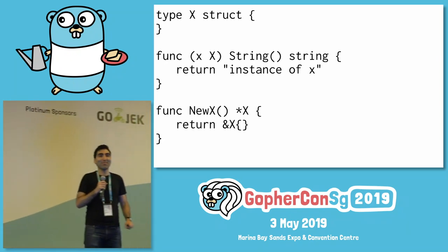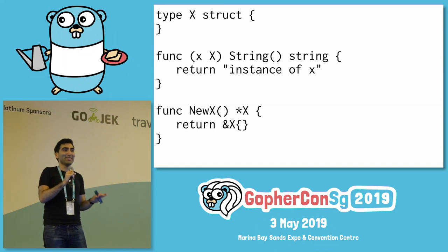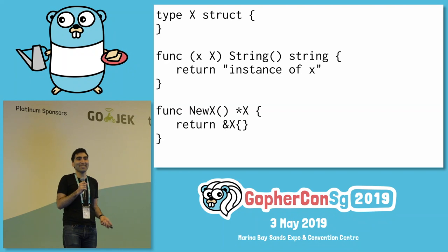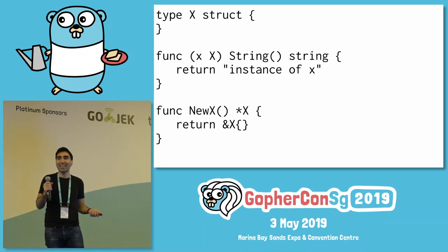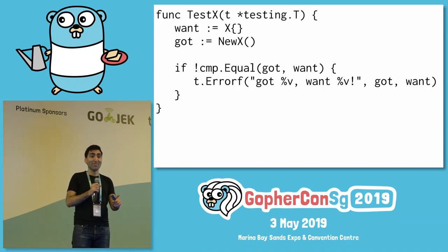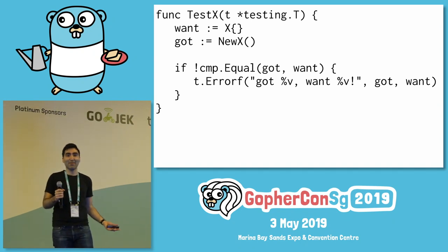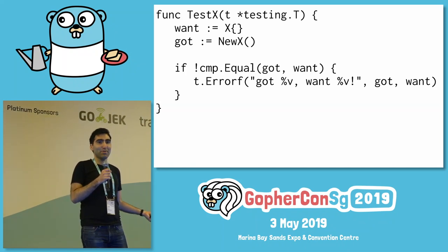So it's pretty standard. I have a struct with nothing in it — all the X's are the same, just to make this super easy. I have a String method on it that just says 'instance of X'. And then I have a New function, which is pretty standard, returning a pointer to a new X. Now I have my test method. This test method has a want and a got, and it compares them if they're equal. If they're not, it presents an error message.